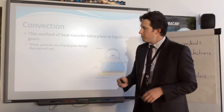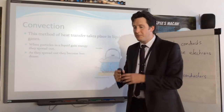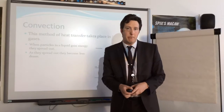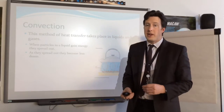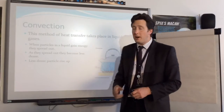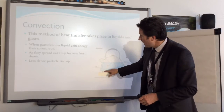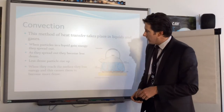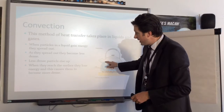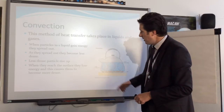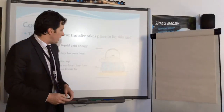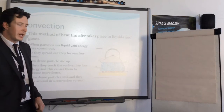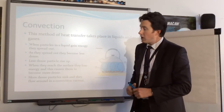The steps of convection: when particles in a liquid gain energy, they spread out and get further apart, becoming less dense. Less dense means they become lighter effectively, so they rise upwards. As they rise to the top they lose energy, become more dense, and sink back down, setting up a convection current in the substance.